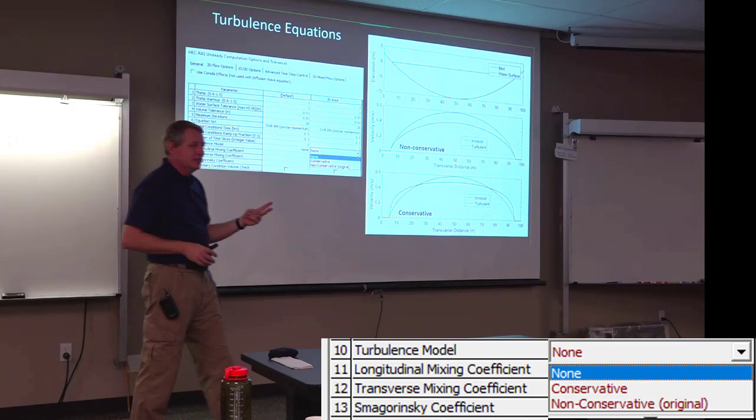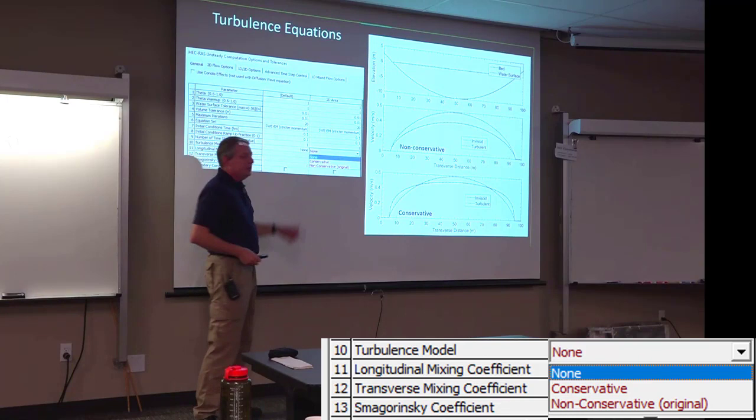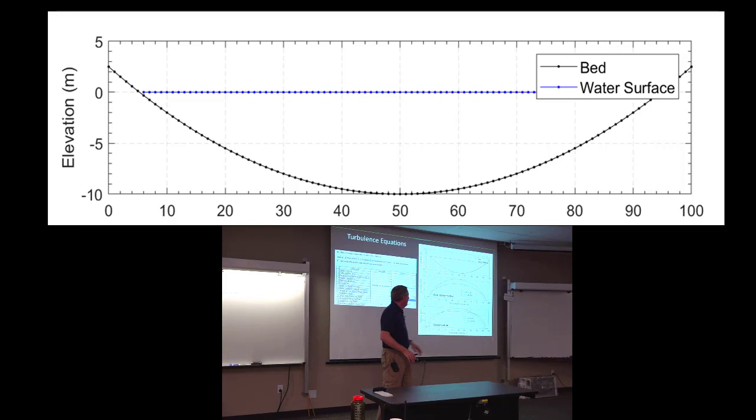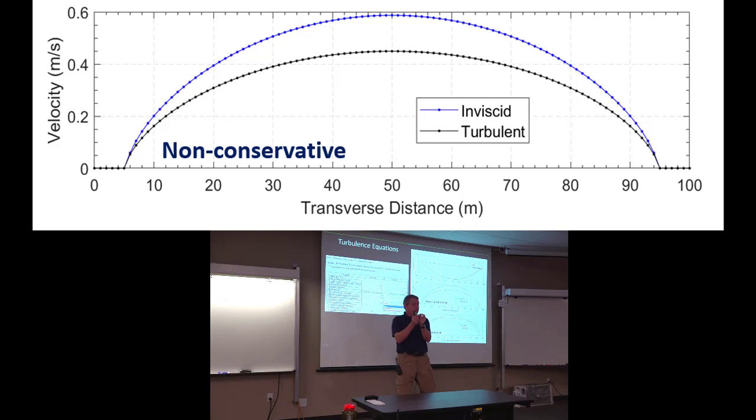There are two turbulence models: conservative and non-conservative. We started out with the non-conservative method. But here's what happens with the non-conservative method. We have this circular channel, a numerical experiment that Alex did. It's a half pipe. And we want to compute the velocity across this half pipe. If there's no viscosity, if it's just an inviscid fluid, so that means there's no losses between flow paths, then this is what the velocity distribution would look like. It's the theoretical velocity distribution for an inviscid fluid in a half pipe.